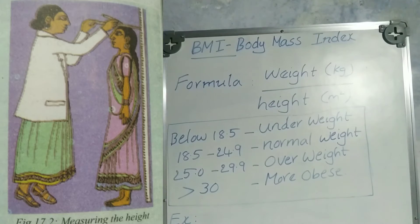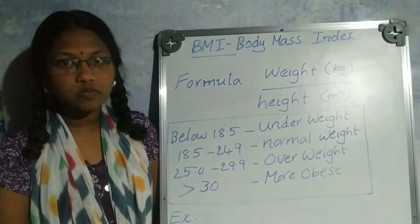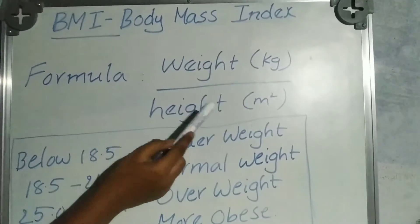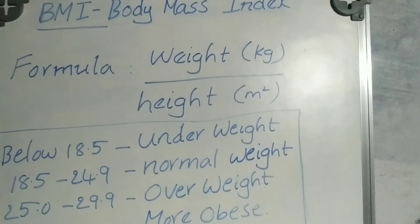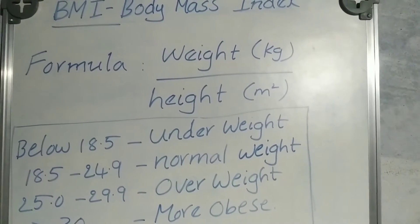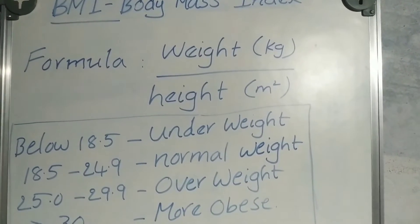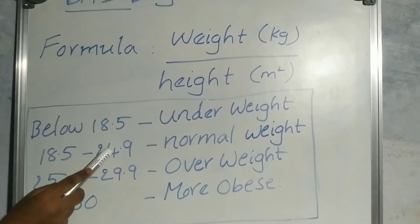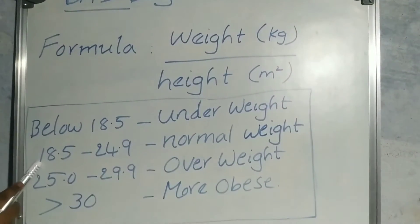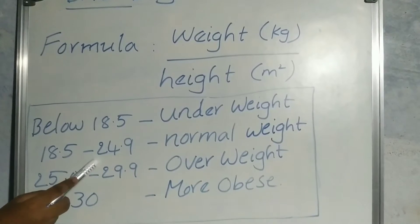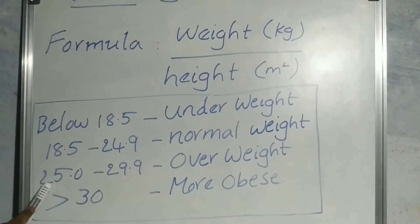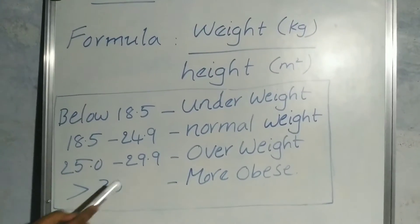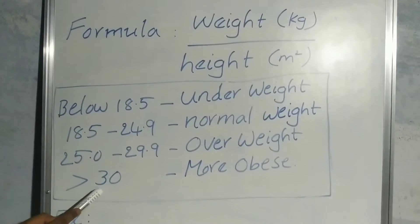To calculate BMI, there is one formula: weight in kgs divided by height in meters squared. After the calculation, if the person gets below 18.5, they are underweight; 18.5 to 24.9 is normal weight; 25.0 to 29.9 is overweight; and more than 30 is obese.